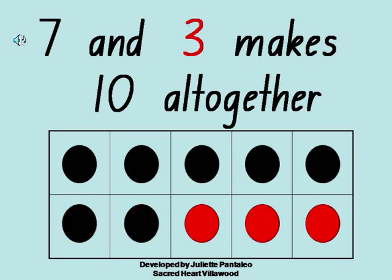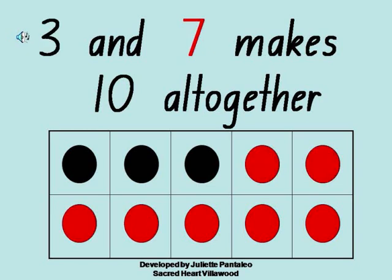7 and 3 makes 10 altogether. 3 and 7 makes 10 altogether.